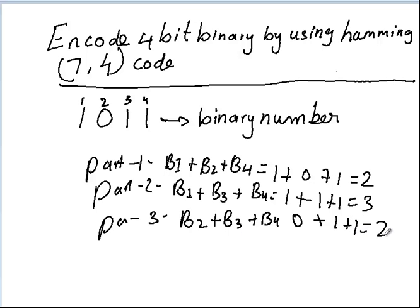Now we need to convert these sums into the actual parity bit values. The important rule is: if the sum is an even number, we set the parity bit to 0; if the sum is odd, we set it to 1. So parity bit 1 has sum 2, which is even, so it's 0. Parity bit 2 has sum 3, which is odd, so it's 1. Parity bit 3 has sum 2, even, so it's 0.